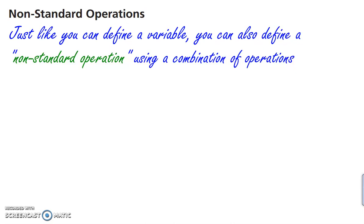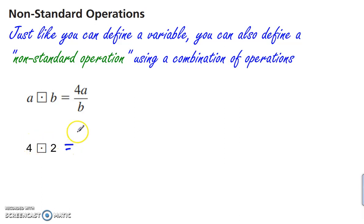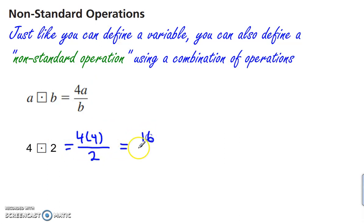Non-standard operations. We know our operations — plus, minus, multiply, divide — but we can also define a non-standard operation using a combination of operations, just like we define a variable. For example, 'square dot' is a non-standard operation meaning the first number is multiplied by 4 and then divided by the second number. So 4 square-dot 2 equals 4 times 4 over 2, which is 16 over 2, equals 8. The operation is defined first, and then we apply it.